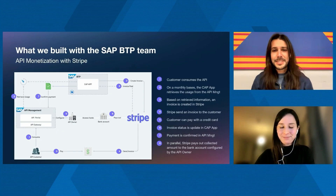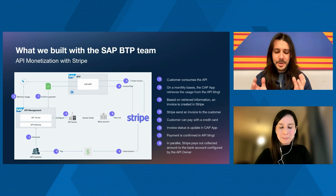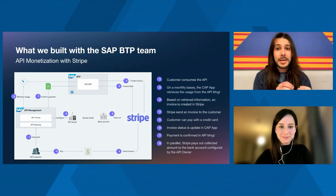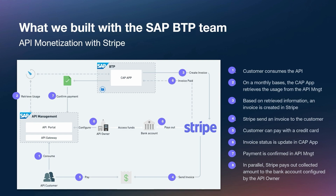Here's where the magic happens. Stripe invoicing is just one of the many building blocks we can use, and this is the one we picked to develop a proof of concept together with the BTP platform adoptions team. We are enhancing the capabilities of the API management service here — going beyond measuring and monitoring API consumption, but also collecting payments for their usage. The API consumer leverages the APIs as usual. At the end of a billing cycle, we created a CAP application that retrieves data from the API management, and with that consumption data, creates an invoice within Stripe.